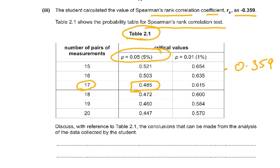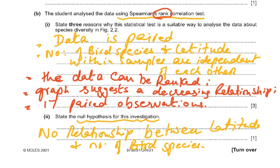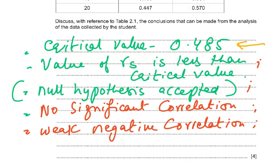There is a weak negative correlation between latitude and the number of bird species. The first thing to remember is you must find out the critical value and write it whenever a probability table is given — that gets you one mark. Value of rs is less than the critical value. Note that saying 'null hypothesis is accepted' is not accepted in the newer mark scheme, so instead give the explanation: there is no significant correlation between the latitude and the number of bird species. Or you could say there is a weak negative correlation, as shown by the negative value for rs.